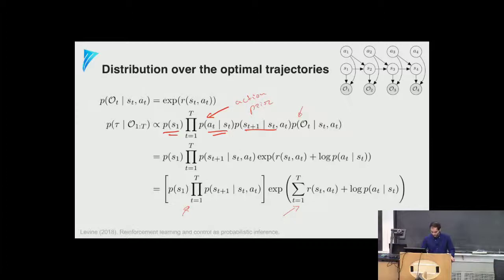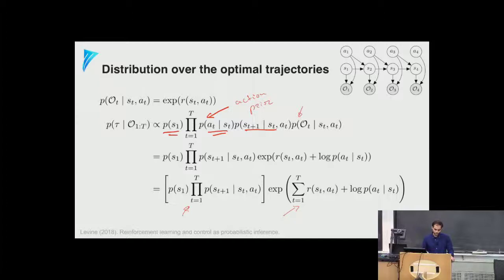This construction was introduced in Sergey Levine's tutorial. The action prior is assumed uniform there but doesn't have to be — for example, we could impose a prior that the agent shouldn't bump into walls, which would assign negligible probability to those actions. For now, assuming the action prior is uniform, we can omit that term.